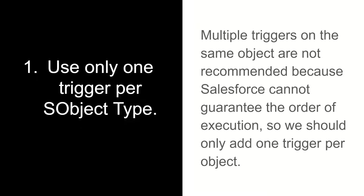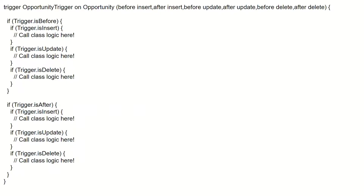Why should there be only one trigger recommended for an sObject? Because Salesforce cannot guarantee you the order of execution of triggers. If there are multiple triggers on an object, Salesforce cannot guarantee which trigger will run first and which will run second. That's why we should have only one trigger on an object.